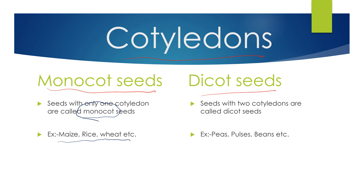Seeds with two cotyledons are called dicot seeds. Examples of dicot seeds are peas, pulses, beans, etc.